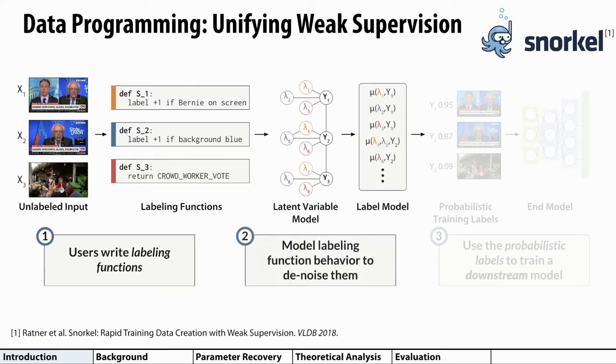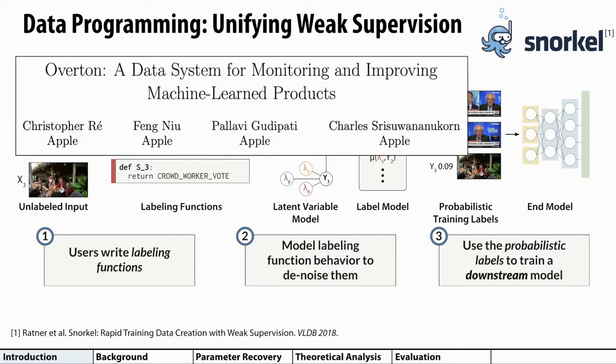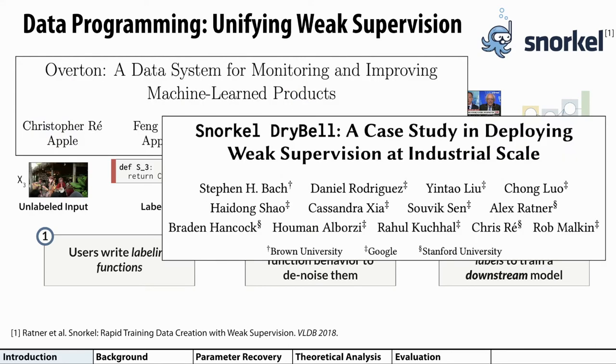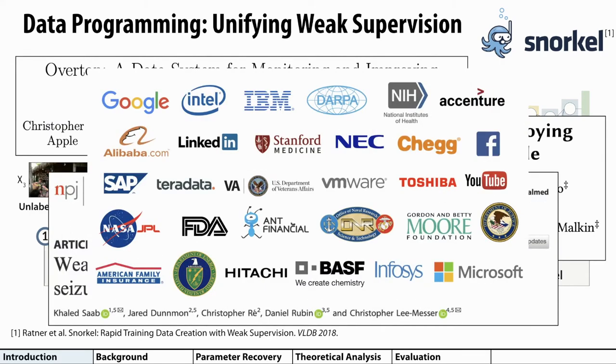Data programming handles these noisy disagreements and abstentions by modeling labeling function behavior and then aggregates the votes to generate probabilistic training labels for a downstream end model. This abstraction has been useful in a number of practitioner use cases, from business applications like AI products at Apple and search products at Google to applications in the sciences. And here's a sampling of other users and collaborators for the Snorkel project.